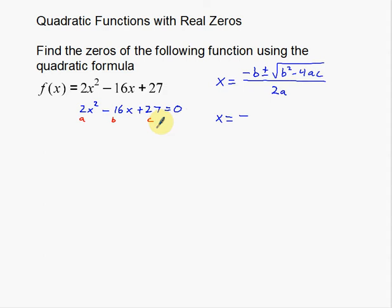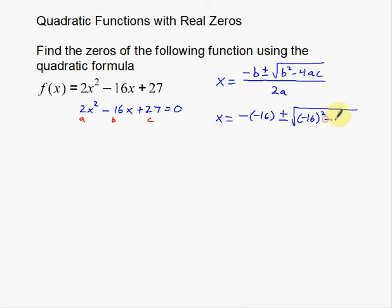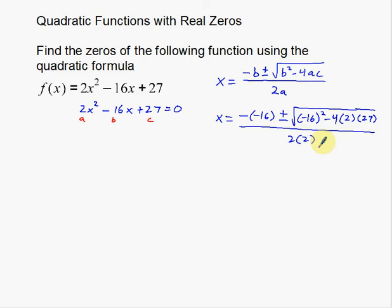So in this case I have negative b, and b is negative 16, so negative negative 16 — that's actually going to make it positive. But you still want to plug it in there so you can see why it's a positive 16. So: negative negative 16 plus or minus the big square root of negative 16 squared minus 4 times a — which is 2 — times c — which is 27 — all over 2 times 2, which is eventually going to be 4.